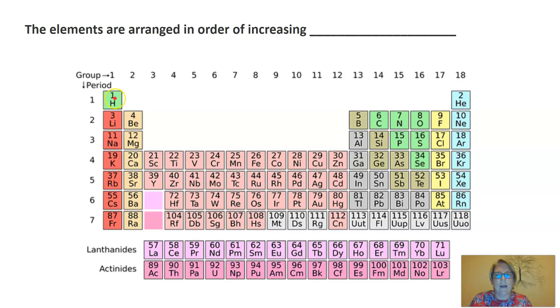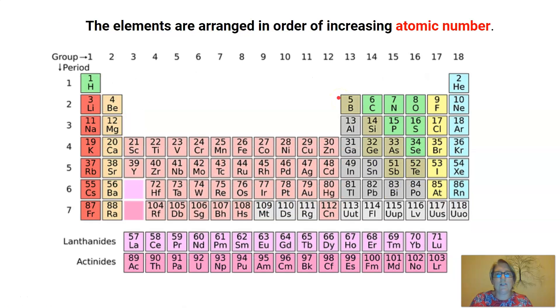So here, H we have one. And then if we move across here, He is two. Here, Li which is lithium is three. Beryllium is four. Boron is five. Carbon, six. Nitrogen, seven. So to answer that question, the elements are arranged in order of increasing atomic number.